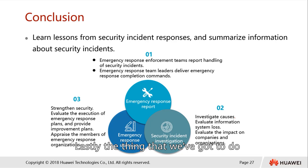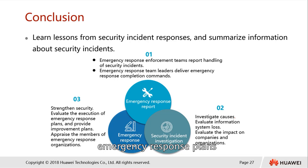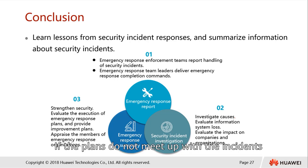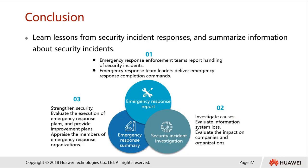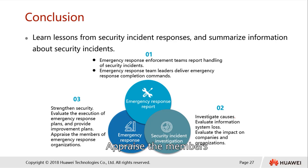To resolve the incidents, we come up with an emergency response summary. For example, we can strengthen our security and evaluate the execution of the emergency response plan. If the plan does not meet the needs of the incident, we come up with better plans, improvise the current emergency response plans, and appraise the members of the emergency response organization.